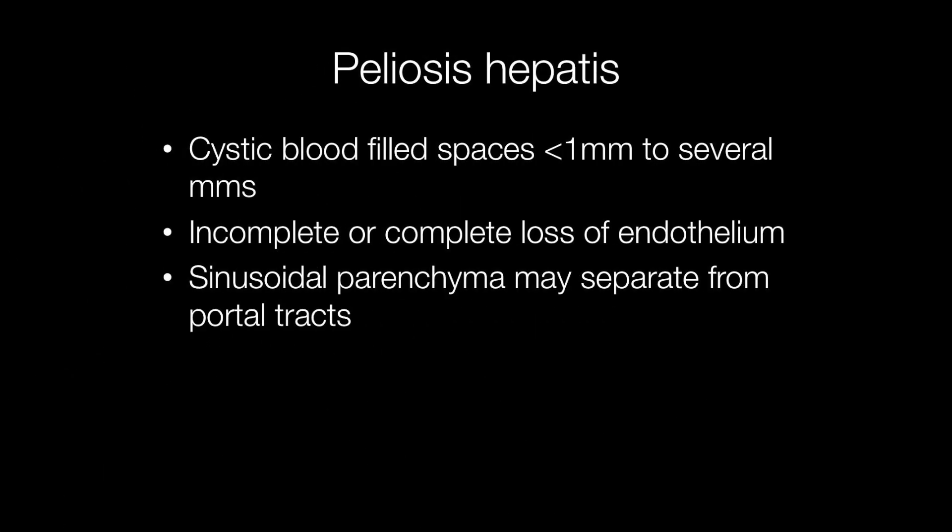The pathological features of Peliosis Hepatis are cystic blood-filled spaces in the liver that may be less than one millimetre across, ranging to several millimetres across. There is incomplete or complete loss of endothelium, and the sinusoidal parenchyma may separate from the portal tracts.